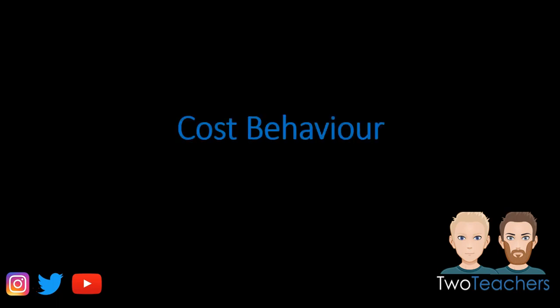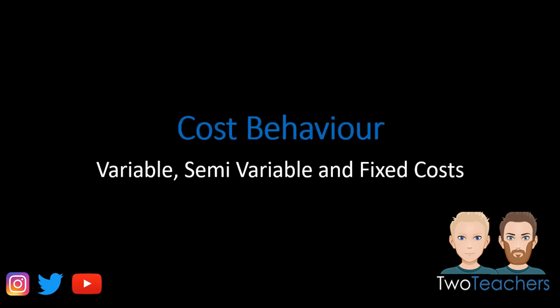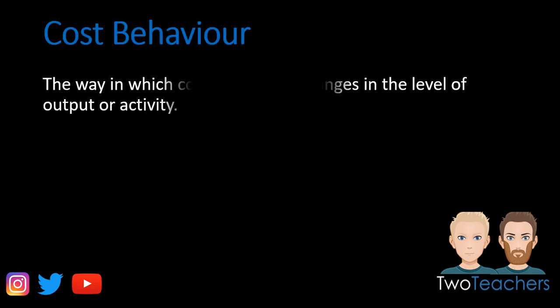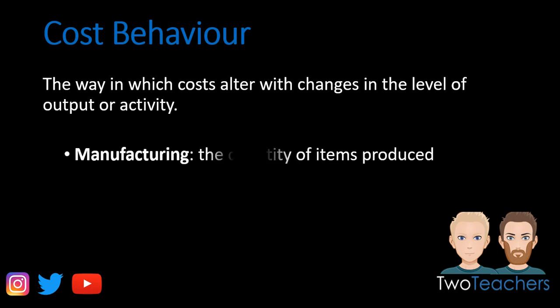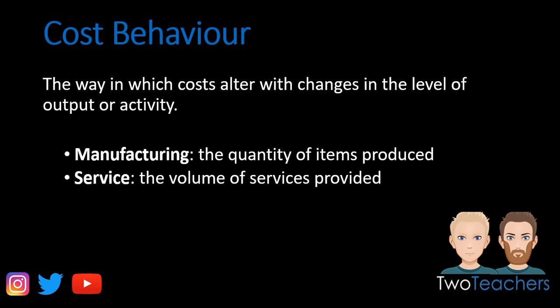Hello and welcome to this short video on cost behaviour. When we are looking at cost behaviour, we are looking to identify the way in which costs alter according to the changes in the level of output or activity of the business. If the business is in manufacturing, we are focused on changes in costs according to the quantity of items produced, and if it's in the service industry, we are looking at changes in costs according to the amount of services we provide to our customers.